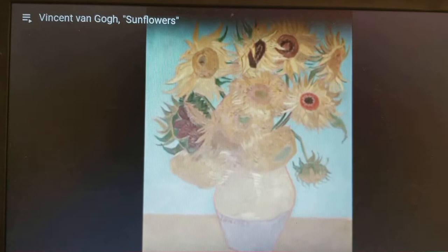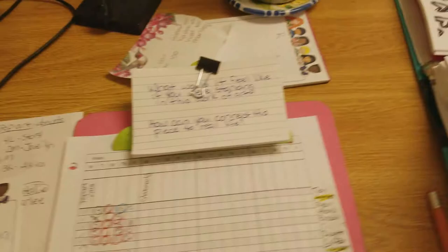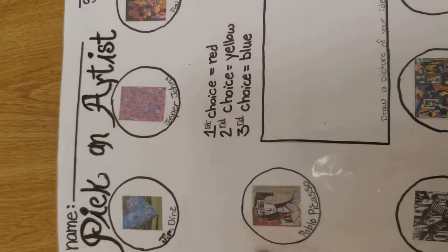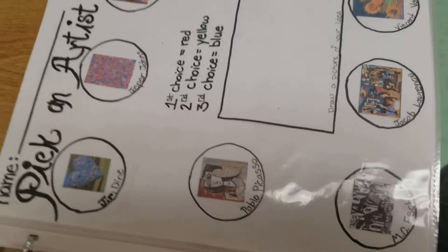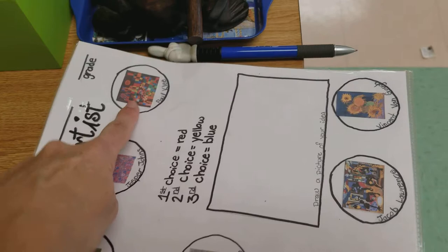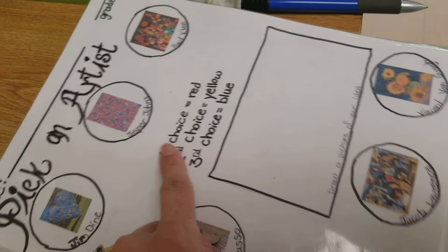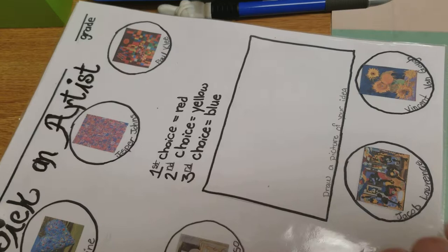We talked about a lot of different artists here, and now we need to decide what artist we relate most to. In a few minutes, you're going to get a piece of paper that says 'Pick an Artist.' You're going to decide what artist you relate most to: Jim Dine, Jasper Johns, Paul Klee, Pablo Picasso, M.C. Escher, Jacob Lawrence, or Vincent Van Gogh. The one you relate to the most, you color the circle red. The one you relate to second, you color the circle yellow. And the last one on your mind, you color blue.